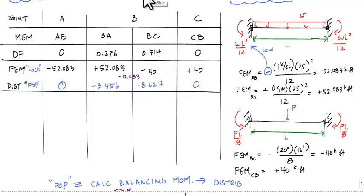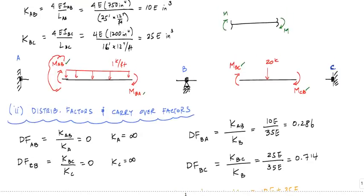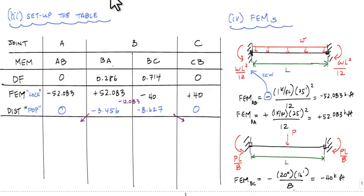Now I carry over. I don't carry over within a joint, but I carry over from the distributed moment on one side to the other end of the member. The negative 3.456 distributed into member AB at end BA gets carried over to end AB: negative 3.456 divided by 2 equals negative 1.728. The negative 8.627 distributed into BC at end BC carries over to end CB: negative 8.627 divided by 2 equals negative 4.314. The carryover values at joint B's ends are zero and zero, so joint B is already in equilibrium — we're done iterating.